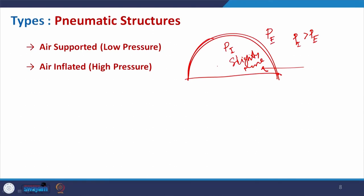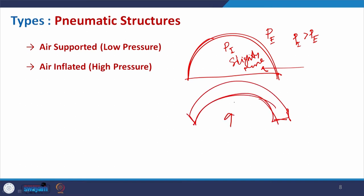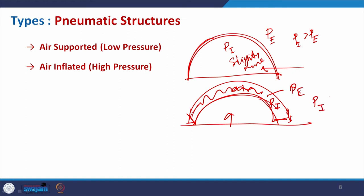The air-inflated type is not a single layer — it uses two layers of surface membrane, and air is not injected directly into the space but into the medium between the two layers. In this case, it is a very high pressure system: P interior is much greater than P exterior. There is no effect on humans inside because the high-pressure air is within the wall layers, not in the habitable space. This gives better stability.